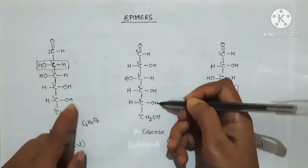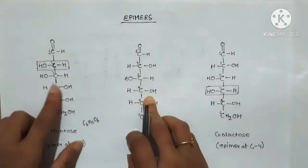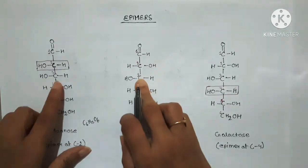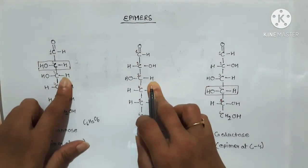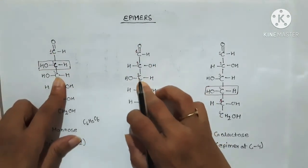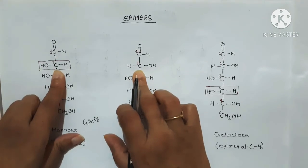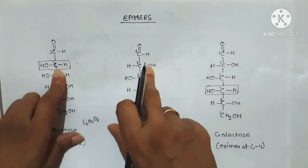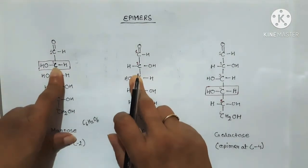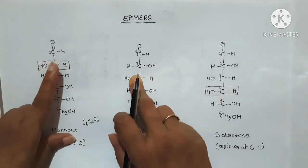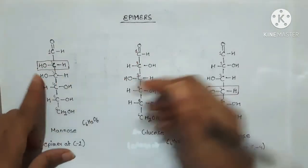Mannose also has four asymmetric carbons. At carbon 5 there is no difference — the OH group is on the right and H is on the left, with CH2OH below. At carbon 4, carbon 3, and carbon 2, we compare the arrangements. At carbon 2, in glucose the hydroxyl group is on the right side, whereas in mannose the hydroxyl group at carbon 2 is on the left side.